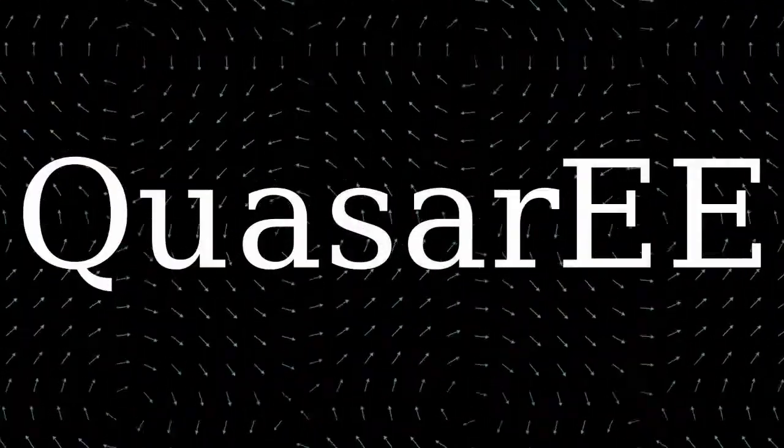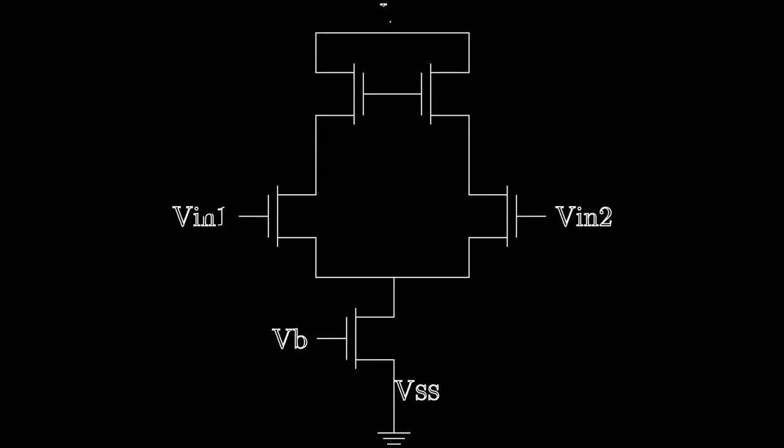Hello, and welcome to the first video in the series on electronics fundamentals. What you're seeing on screen right now is the circuit for a differential amplifier made out of transistors, specifically MOSFETs.